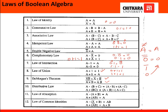The law of absorption is really important. a·(a+b) equals a. Multiplying out: a·a equals a, giving a + ab. Taking a as common gives a·(1+b). Since 1+b equals 1, this becomes a·1, which equals a. Left-hand side equals right-hand side — it is proved.